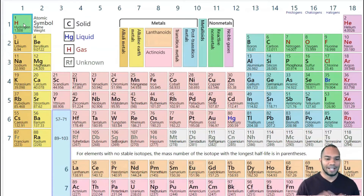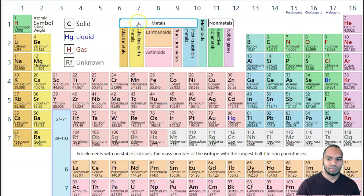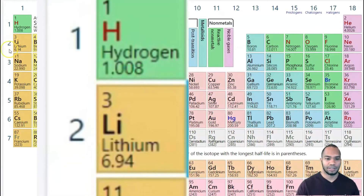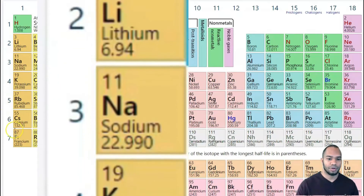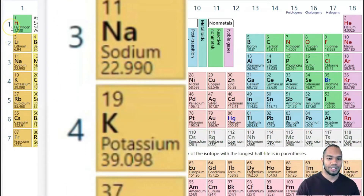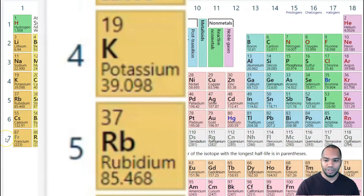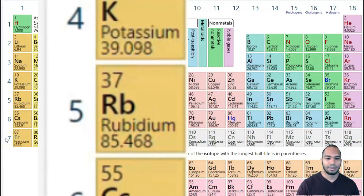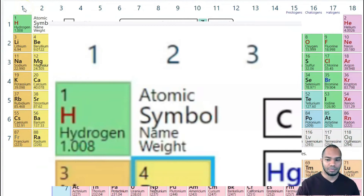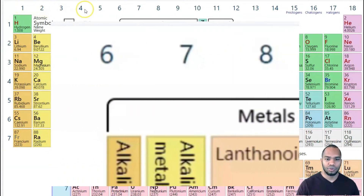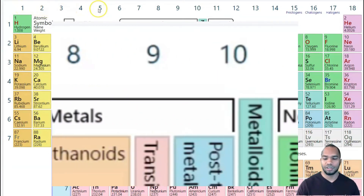The rows — the horizontal rows — are known as periods. We can see that there are seven periods on the periodic table. And the columns — the vertical columns — are known as groups.